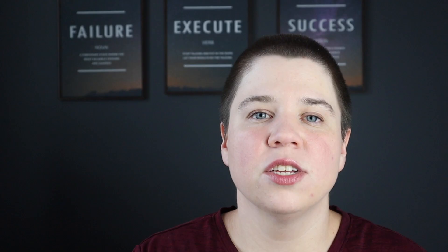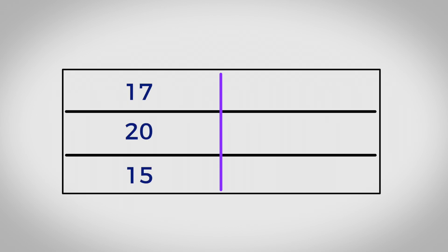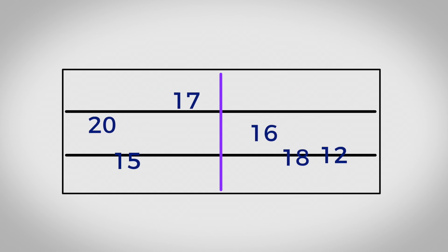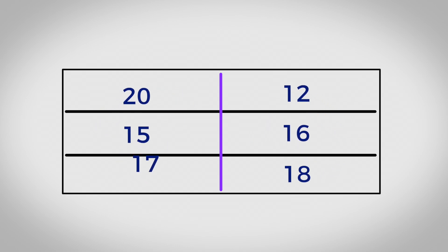The easiest way to determine if your sample is a good fit for a paired t-test is to use the row test. The row test is a simple test where you put all your values in one column for one group and all your values in another column for the other group, and then you re-sort those two columns independently of each other — did you lose information?